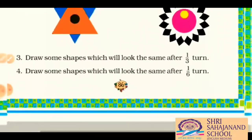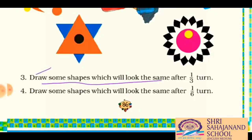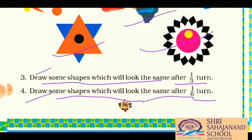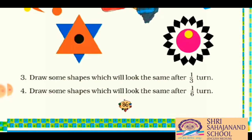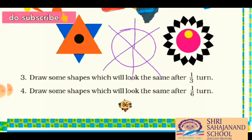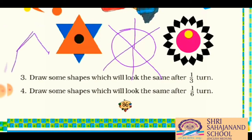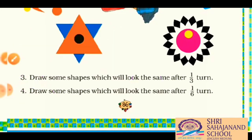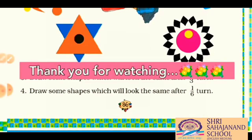Now we have the last two questions. Question three is: draw some shapes which will look the same after one-third turn — you can use these pictures for reference when drawing. And the last question is: draw some shapes which will look the same after one-sixth turn. For this, you can make a circle and color it, because in each one-sixth turn it will look the same. You can also make a hexagon — it will also look the same in each one-sixth turn. So in this way today's class is over, and this lesson is also over. See you all in the next video — till then, stay at home, be healthy, bye bye.